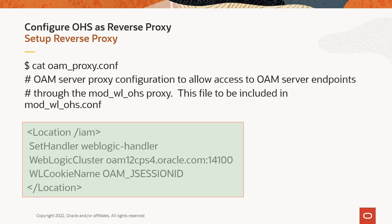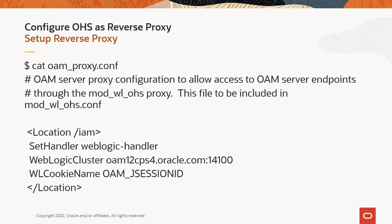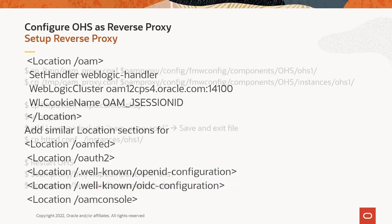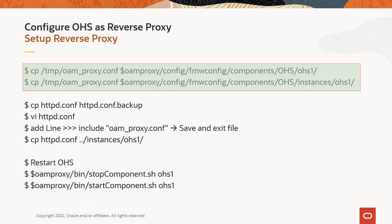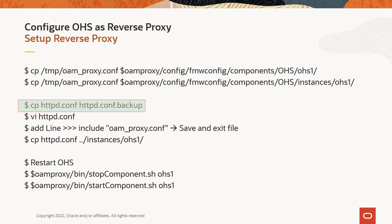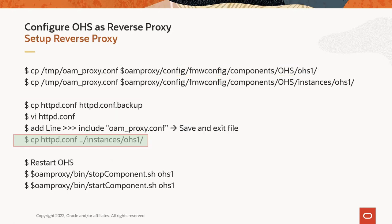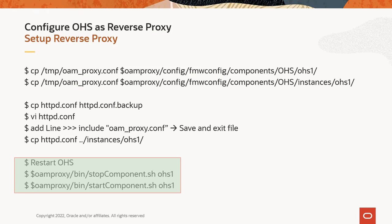The file has locations: /IM, /OAM, /OMFED, /OAR2, and a few more as shown in the slide. Copy oam-proxy.conf to the stage and runtime directory of the new OHS proxy instance. Take a backup of the httpd.conf file in the stage directory, then edit it to include the new conf file. Copy the updated httpd.conf to the instances directory and restart OHS. Once it starts, verify it is running by accessing the URL.